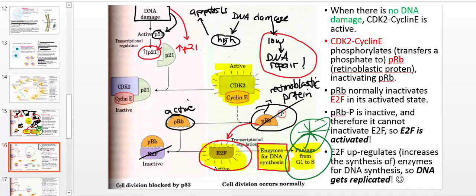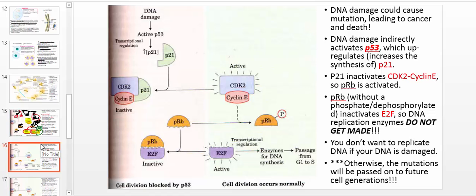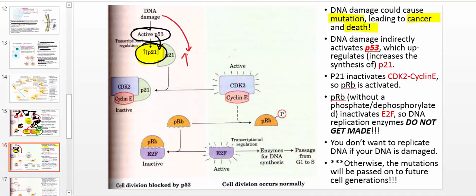The problem comes when you have DNA damage. DNA damage is important to prevent because it could lead to mutation, which could lead to cancer and ultimately death — mutations in DNA can be lethal. What ends up happening is damage to DNA activates P53. When P53 becomes activated, it leads to an increase in the synthesis of P21; in other words, P21 gets upregulated. So DNA damage leads to an increase in the concentration of P21.